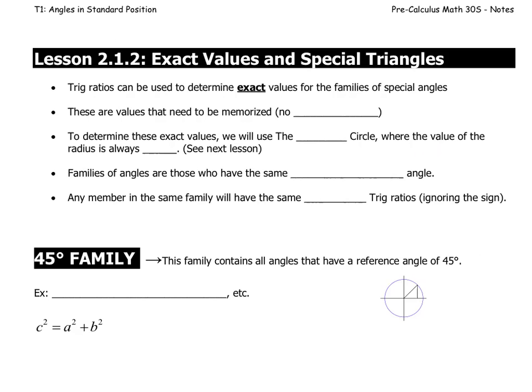For today's lesson we're going to examine exact values. Trig ratios can be used to determine exact values for families of special angles. These are values that we will memorize. There are no calculators allowed.